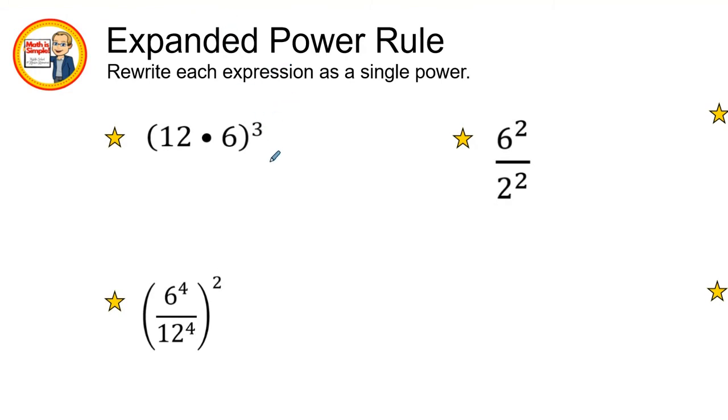So using the expanded rule, I could see this is the same thing as saying 12 to the third power times six to the third power. But since I want to have a single power, I can combine what's in the middle. 12 times six is 72, and it would be 72 to the third power.